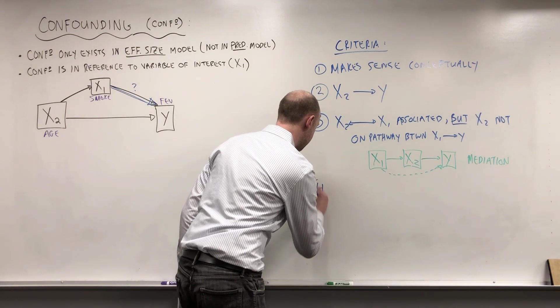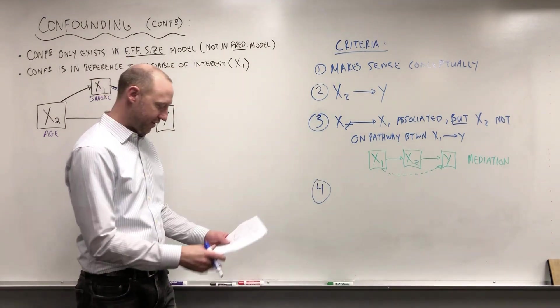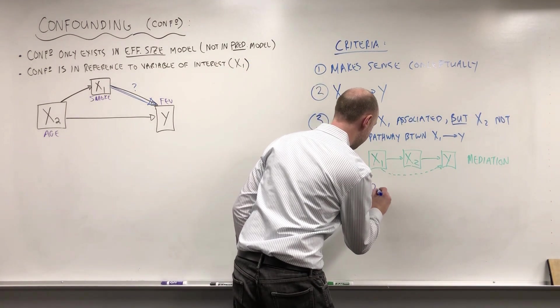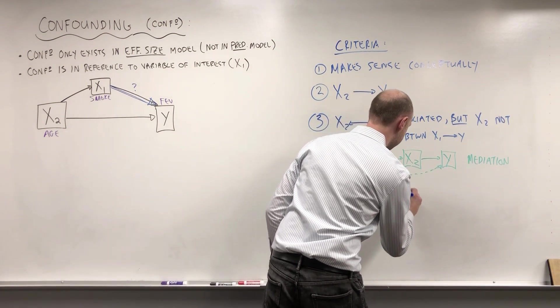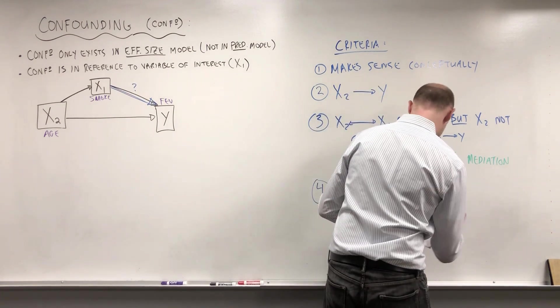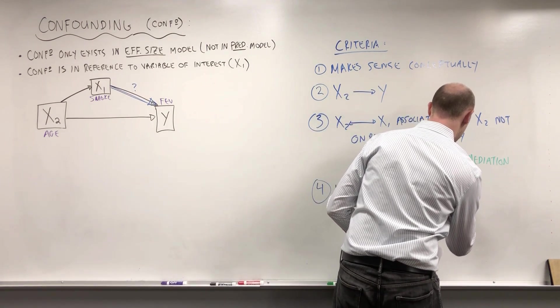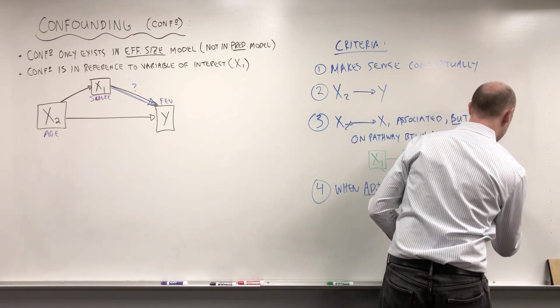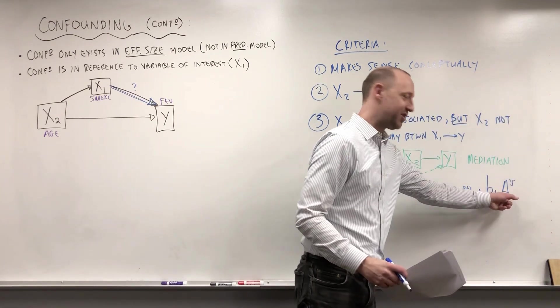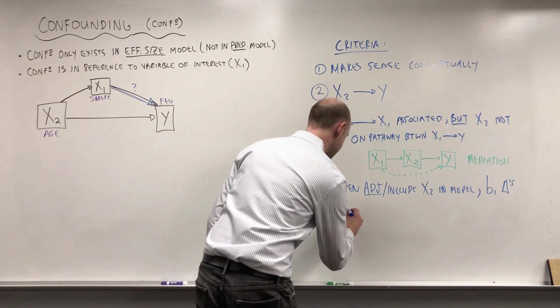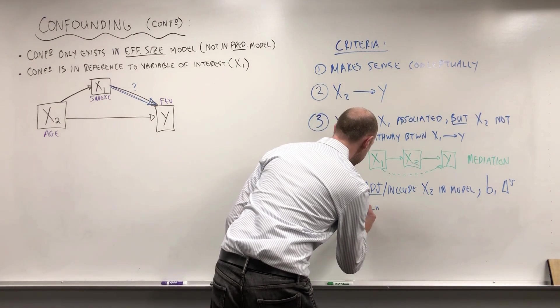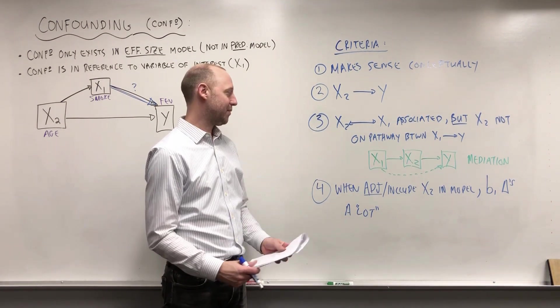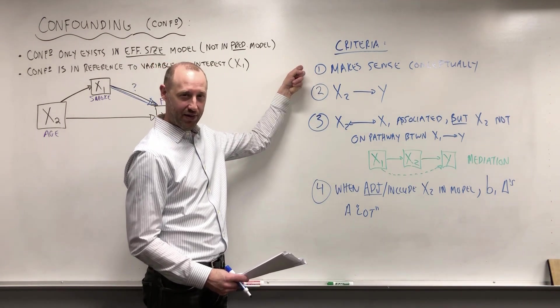The final kind of numeric criteria, what you're going to see numerically, is that when you adjust for or include X2 in the model, B1 changes, and if you don't know the notation, the triangle is short for changes, B1 changes a lot. Putting quotes on there, keeping it subjective. We don't want to define a criteria of how much change is enough to call something a confounder.